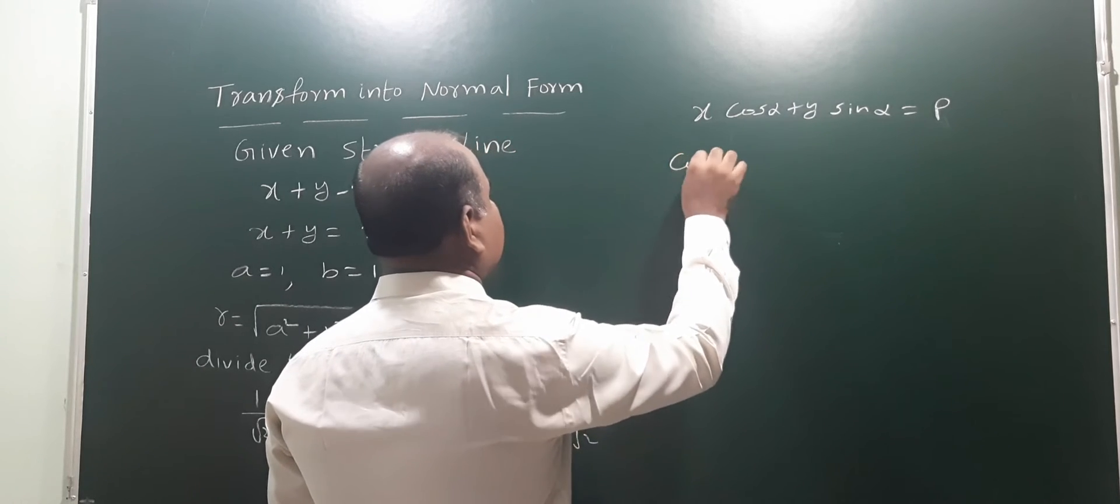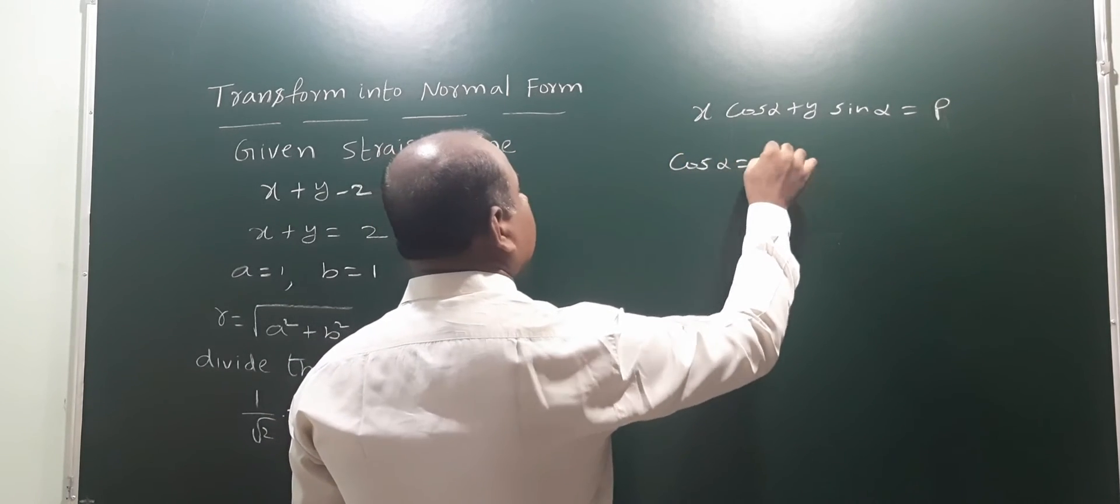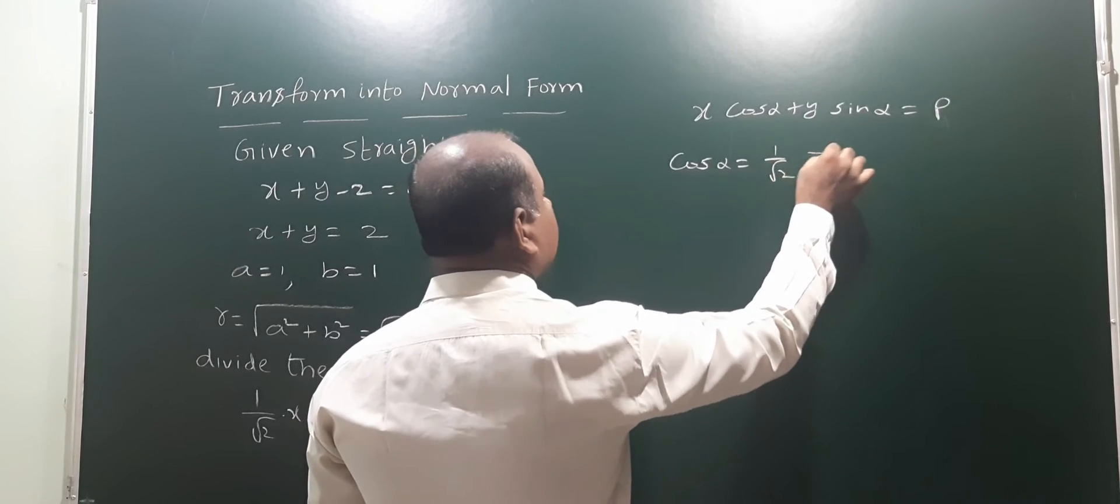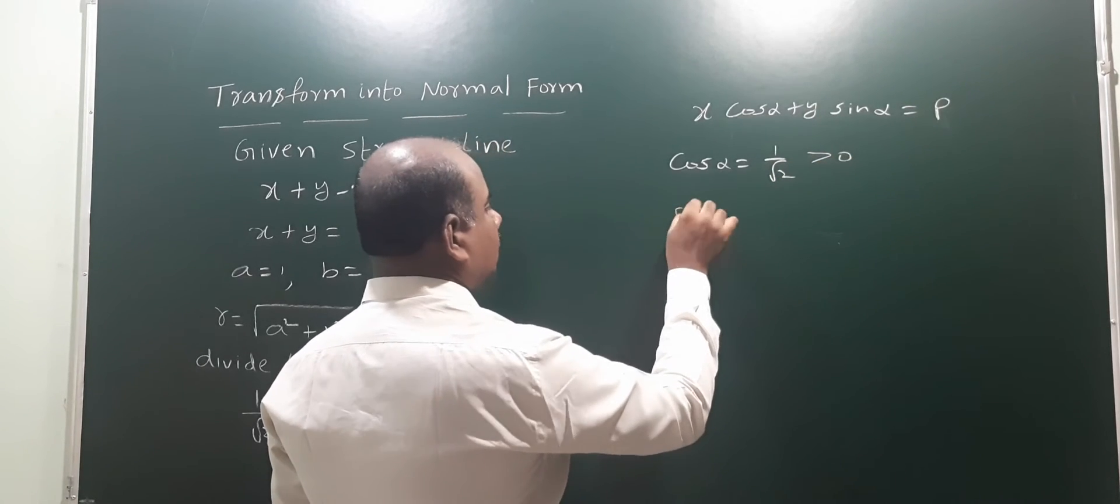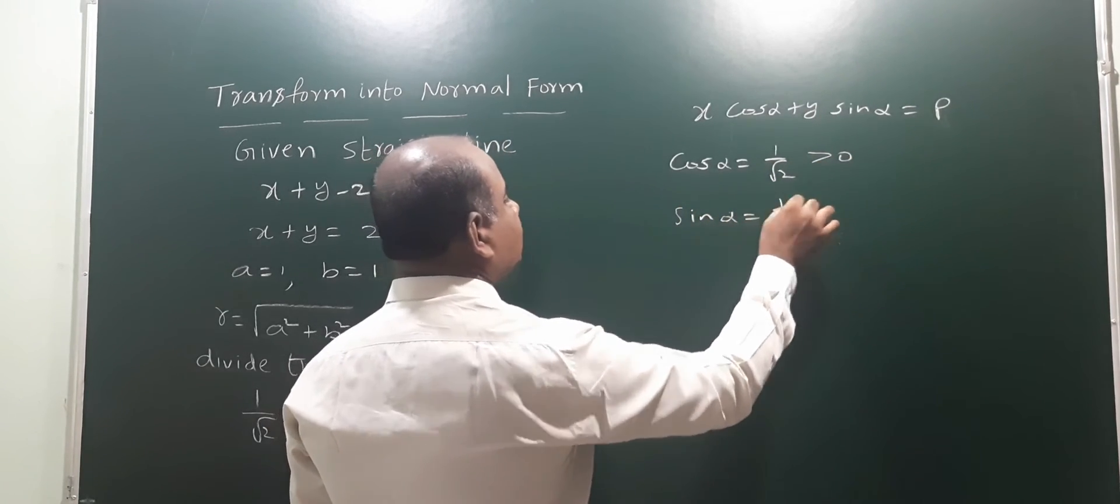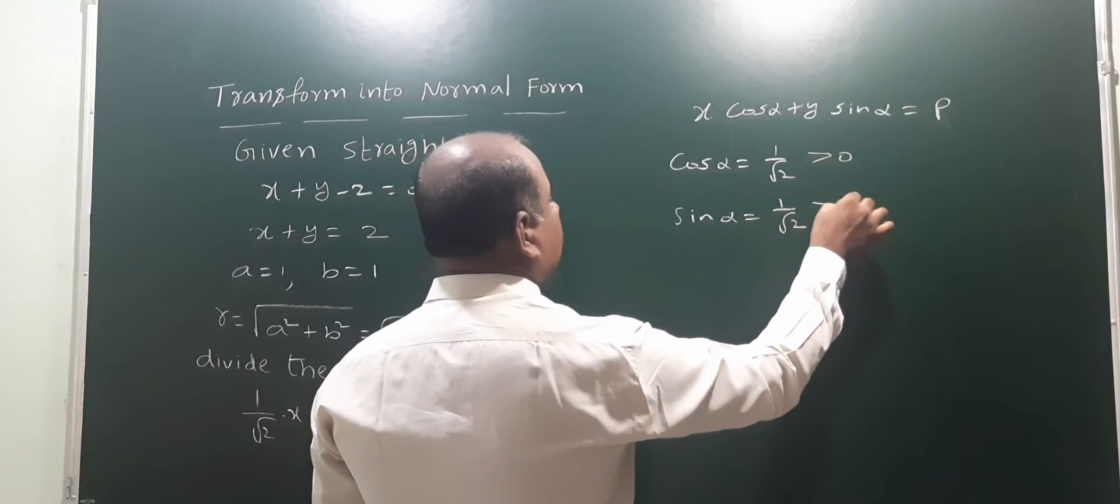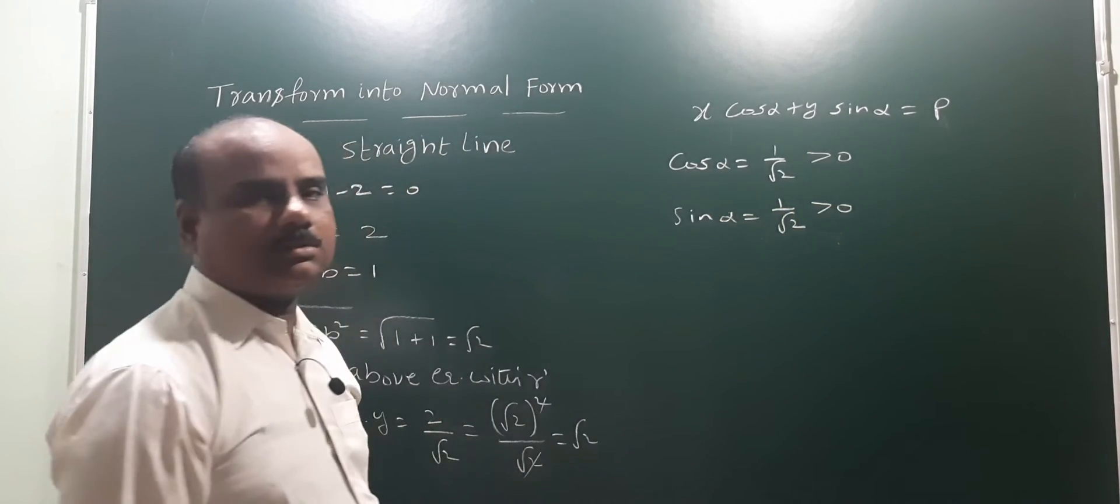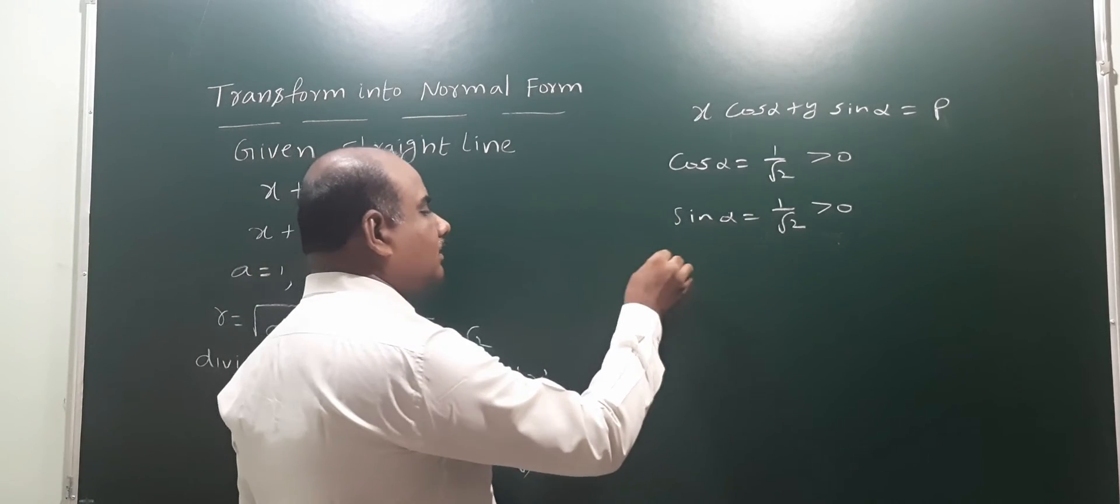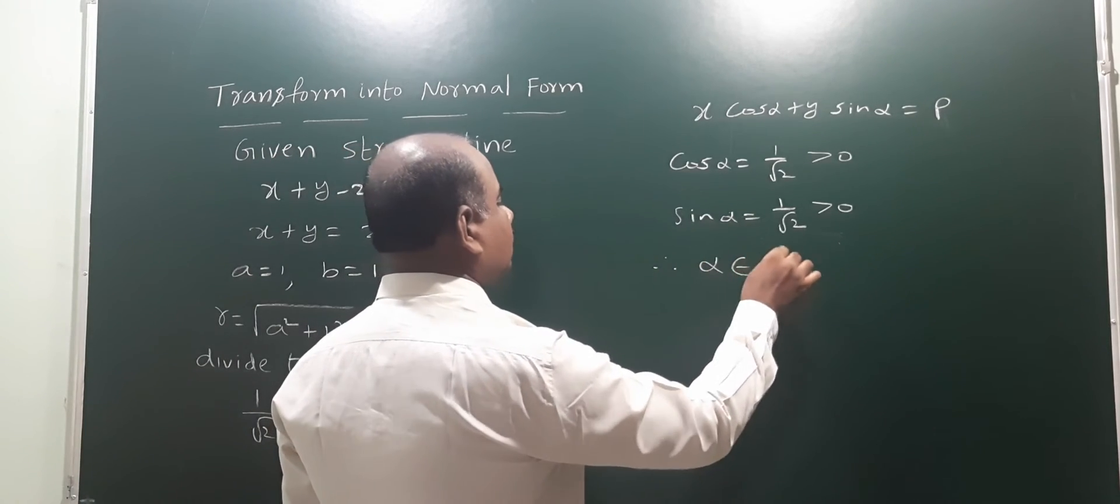Comparing: cos alpha is 1 by root 2, which is greater than 0, and sin alpha is also 1 by root 2, greater than 0. Since both cosine and sine are positive, alpha belongs to the first quadrant.